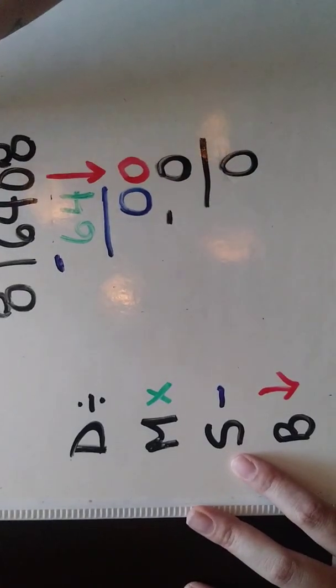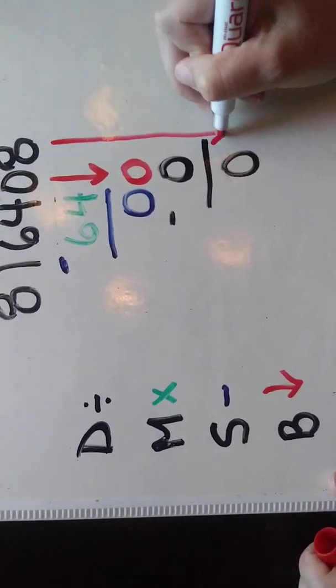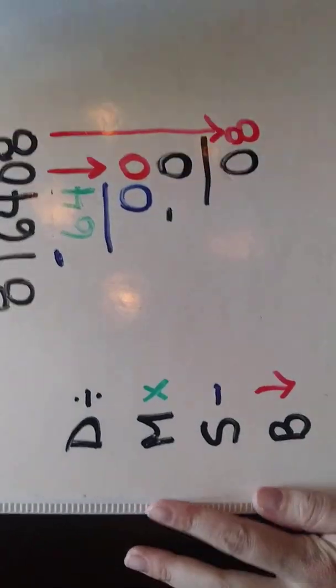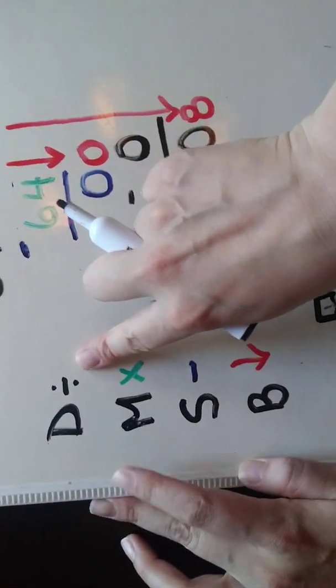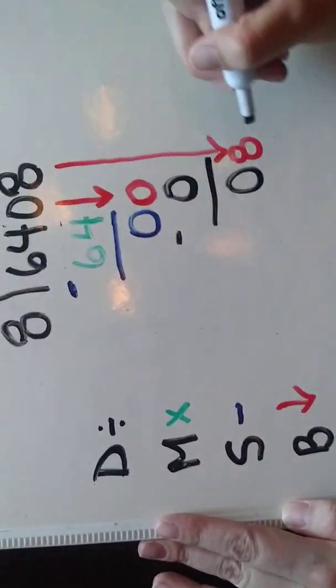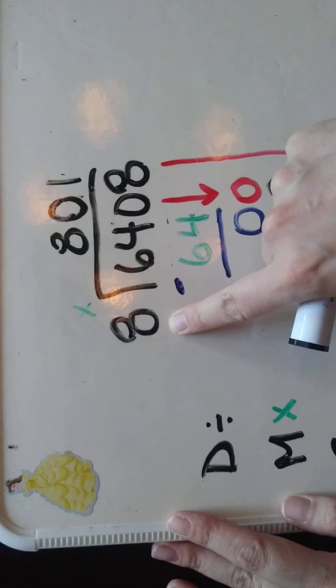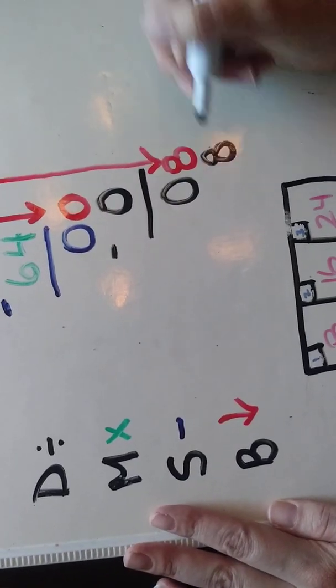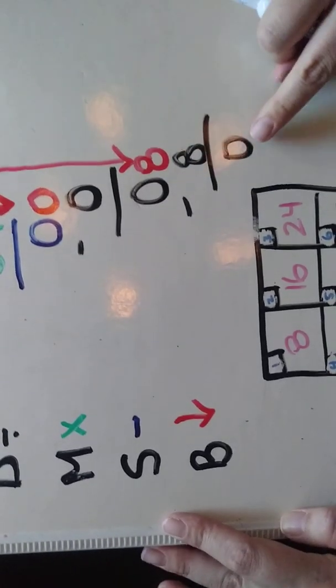Then I'm going to bring it down, continue with the next step. So I bring down to have my 8 there, and I keep going with my division as the first step. How many times does 8 go into 8? It goes in once. 8 times 1 is 8. 8 minus 8 is 0, and I'm done. I do not have a remainder there.